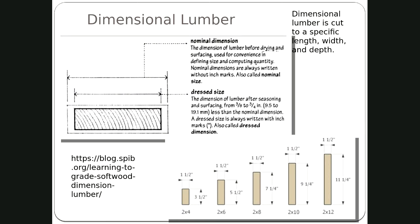An important point about dimensional lumber: lumber is cut to size — a two-by-four is cut two by four inches. That's the nominal size. The dressed or finish size is what it ends up being after shrinkage. A two-by-four is not two inches by four inches — it's one and a half by three and a half. In a really old house, the two-by-fours are real two-by-fours because they were cut to size after they dried.